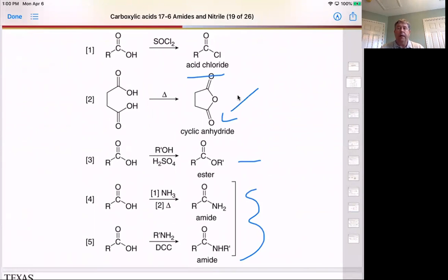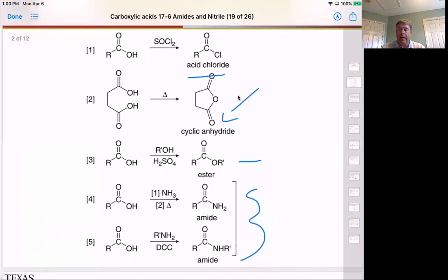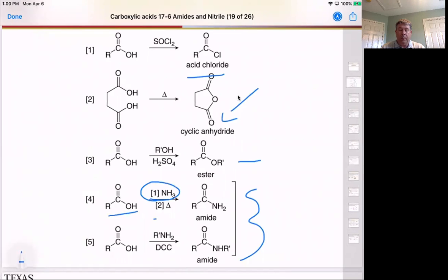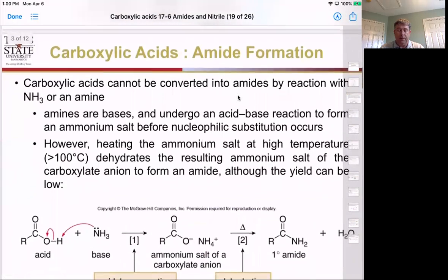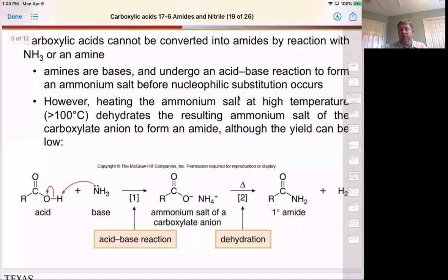We've seen how we can make it from acid chlorides and anhydrides and also the conversion of the esters, but you can also make it directly by the conversion of a carboxylic acid in an amine in the presence of heat. Let's look at that reaction as being specific to just this series that we haven't talked about yet. We can't just take it and react it with the acid and the base directly because what's going to happen is you're going to get the acid-base reaction. So what you're going to end up with is an ammonium salt with a carboxylate anion.